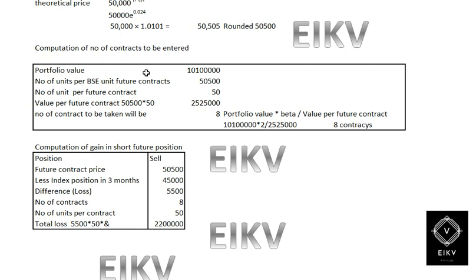Now the computation of the number of contracts: the portfolio value is one crore one lakh. The number of units per futures contract is 50, so units per contract = one crore one lakh divided by 50, which gives 50 units... wait — the value per futures contract is 50,500 × 50 = 25,25,000. The number of contracts = portfolio value × beta divided by value of futures contract = (one crore one lakh × 2) divided by 25,25,000, which equals 8 contracts.